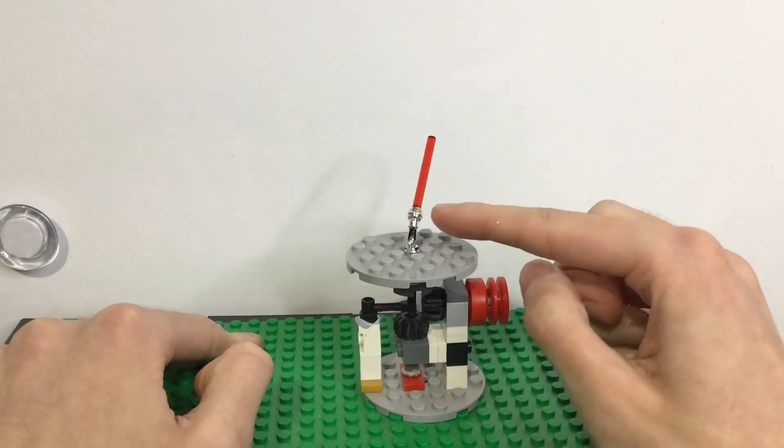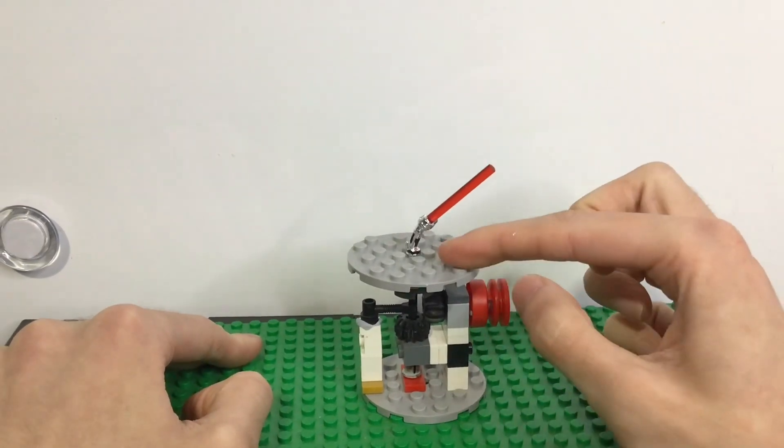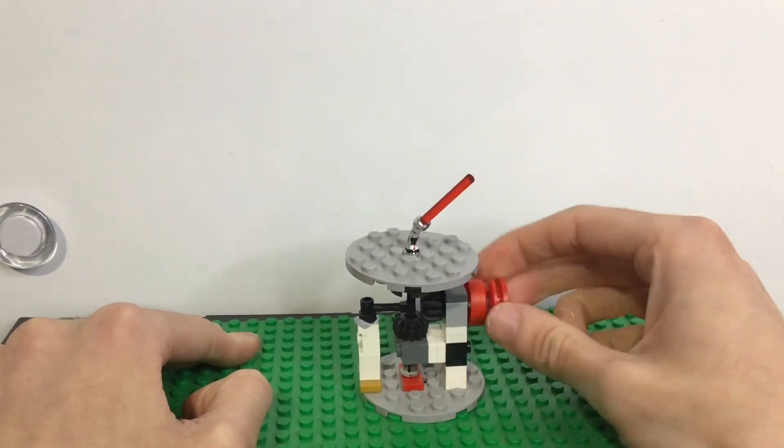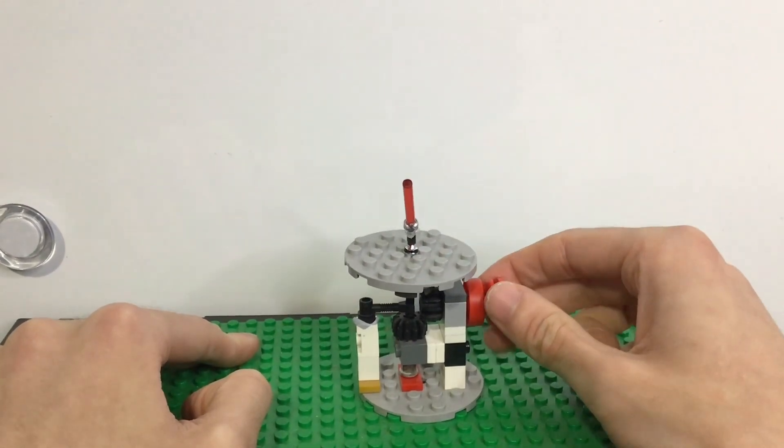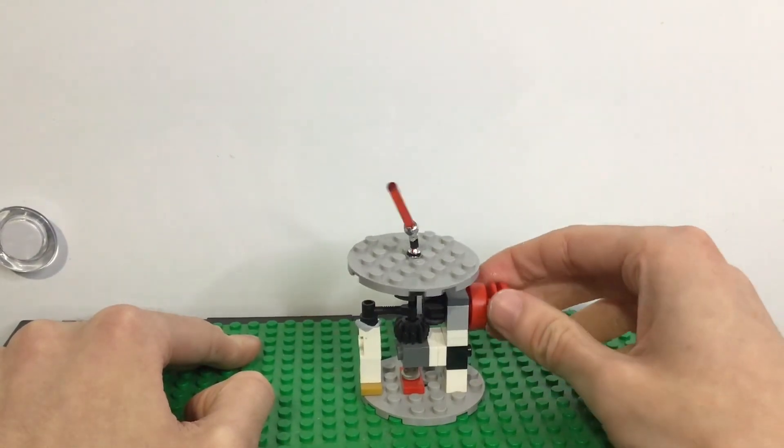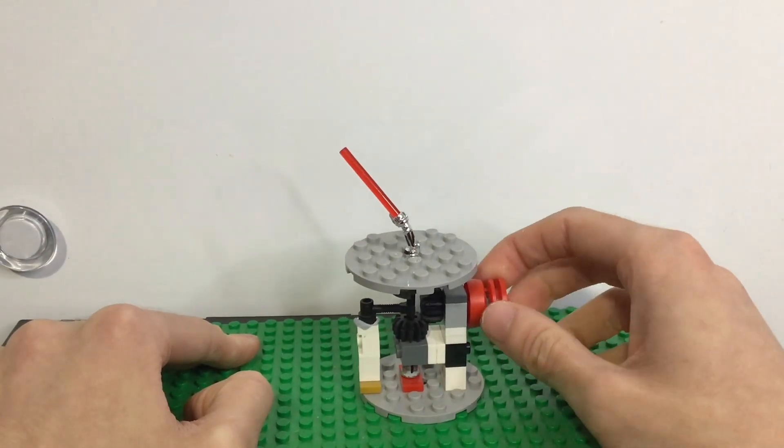Here's Count Dooku's - it's accurate to the actual lightsaber model seen in the movies. As you can see I've added black highlights, red highlights, gold highlights. I even added the spike where the lightsaber actually connects to the hilt. I'm pretty happy with this one, it's really good.